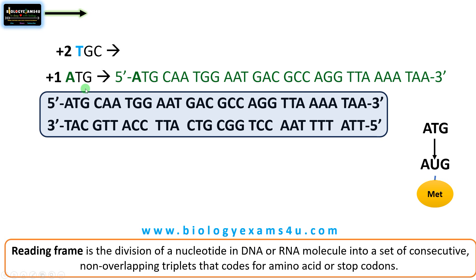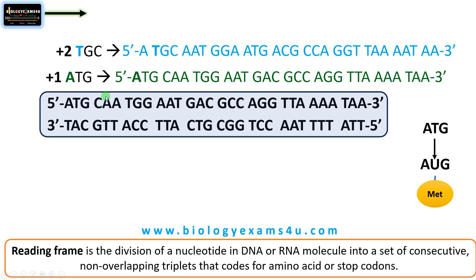The second reading frame is the plus 2 reading frame. If we select the second nucleotide — here the base is T — and begin from here, then the triplets are TGC, AAT, GGG, TGA, like that. The reading frame has changed, and therefore the coded amino acid has also changed.